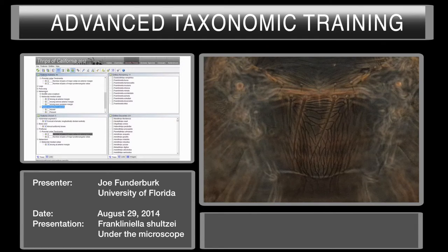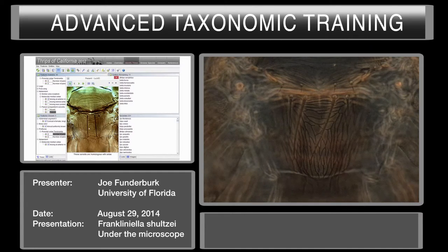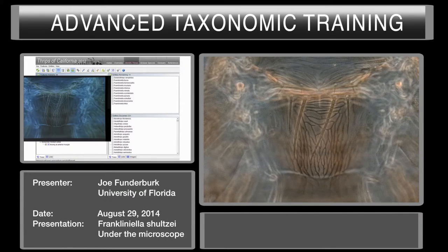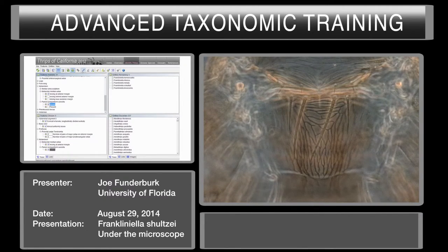Here we have the metanodum. Suppose you didn't know what the campaniform sensilli were — here you could click on the choice that says present and you can see them here. Do we see that in our specimen? No, we don't see them. So we're going to say absent.